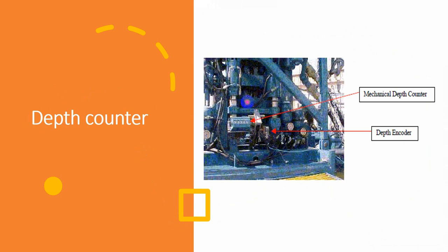We can see here a depth counter — this is a mechanical depth counter — and this is a depth encoder to represent the value electrically in the control cabin's data acquisition system, so this data is recorded and interpreted. Note that we also have a second mechanical depth counter on the level wind on the rail. Usually we observe depth from the one on the rail, since the one on the injector head is far from the operator.